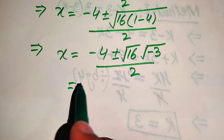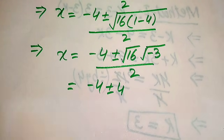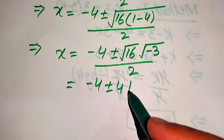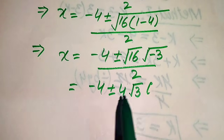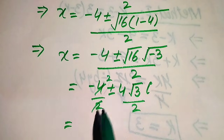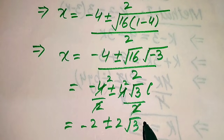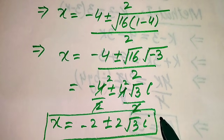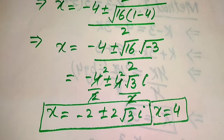After simplification, the square root of 16 becomes 4, and the negative sign inside the square root introduces iota, giving ±4i√3. Breaking the fraction and applying 2 to both terms: −4/2 = −2 and 4i√3/2 = 2i√3. So the other two roots are x = −2 ± 2i√3. These are complex roots. In total, the three roots of the given equation are x = 4, and x = −2 ± 2i√3.